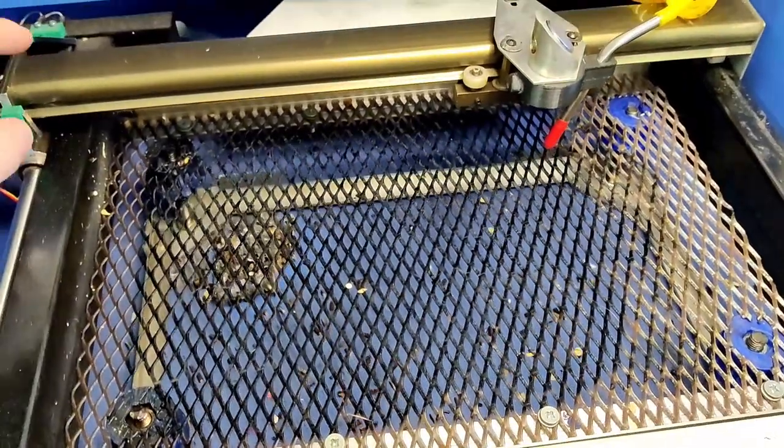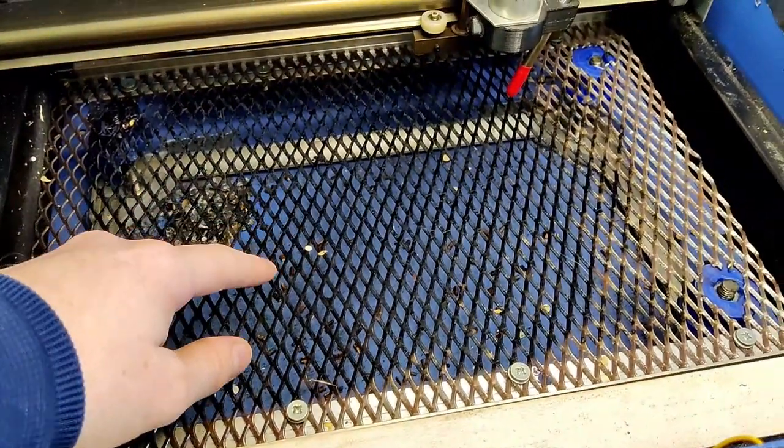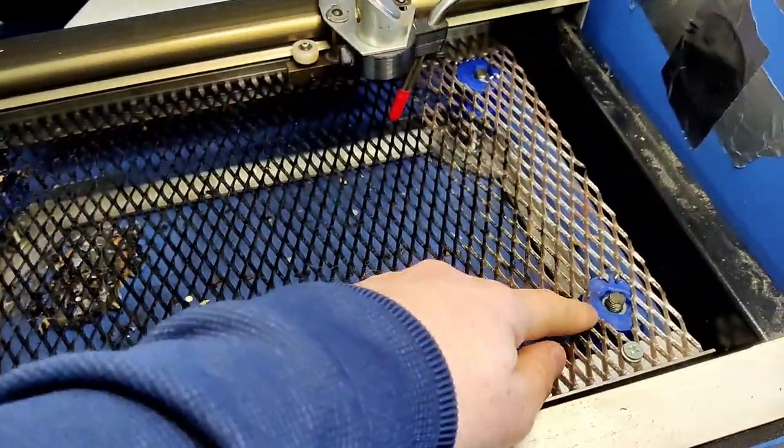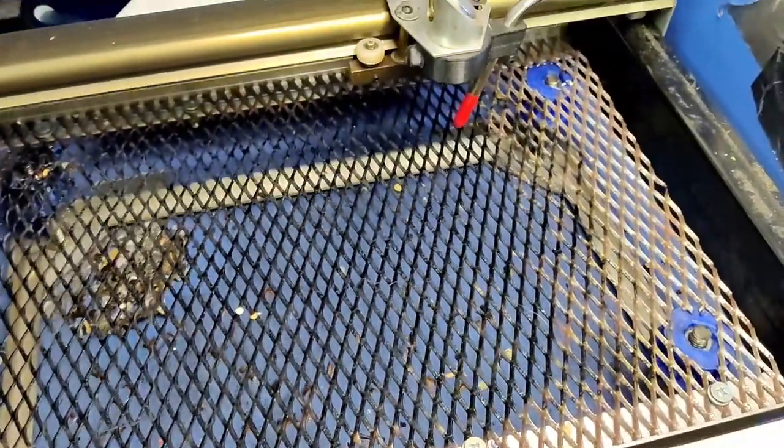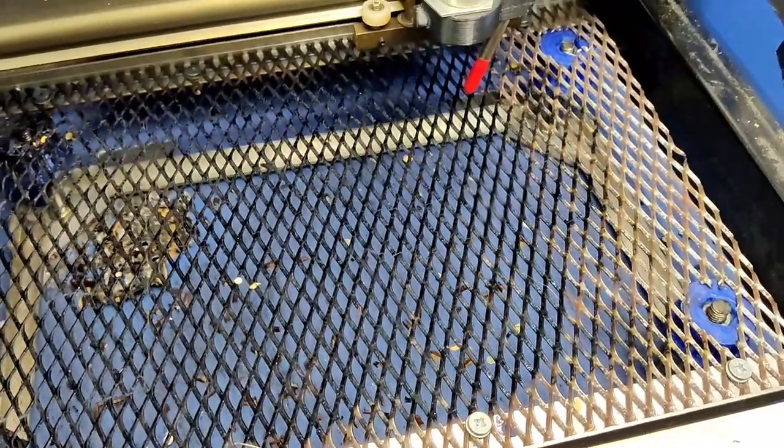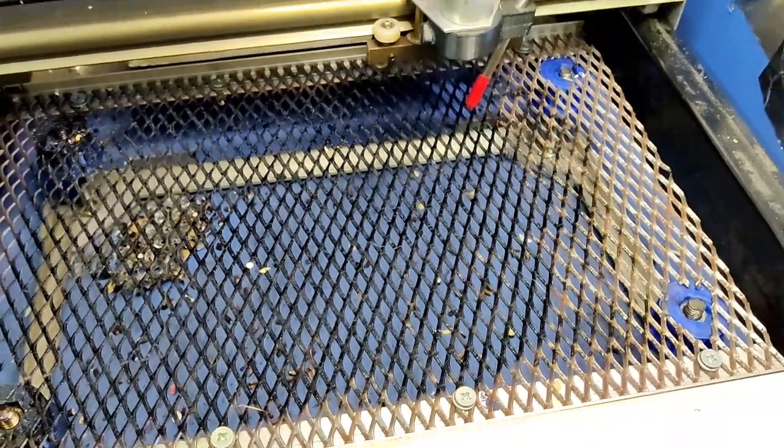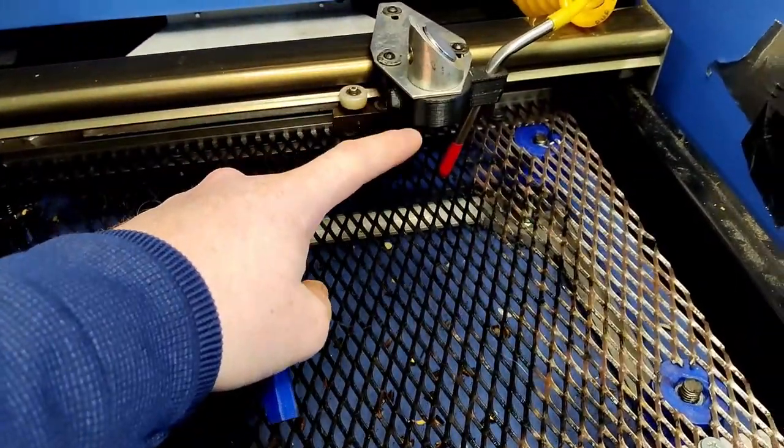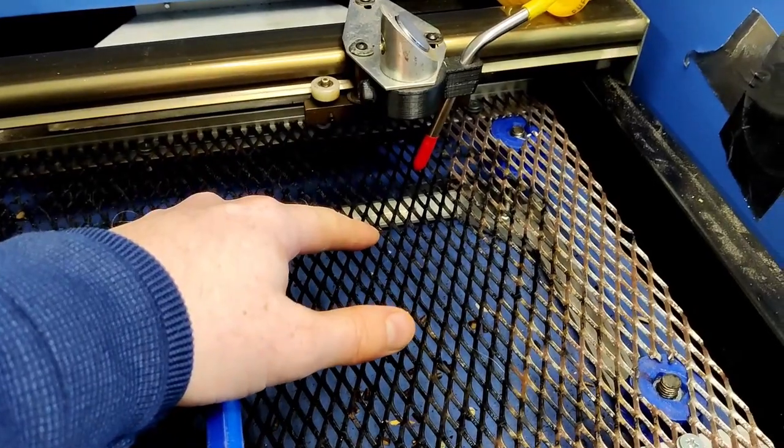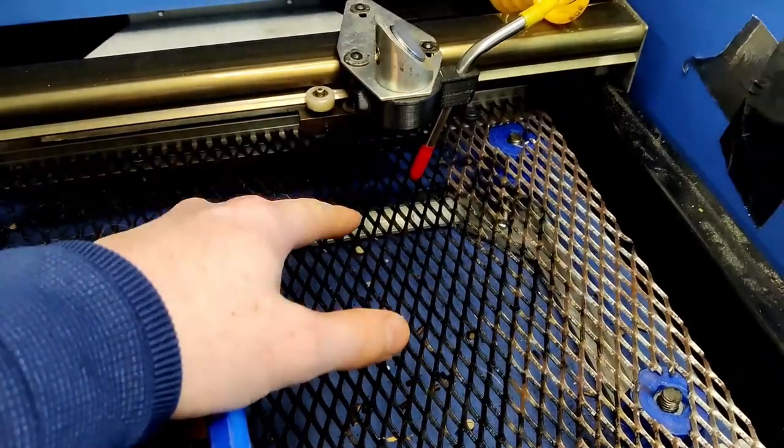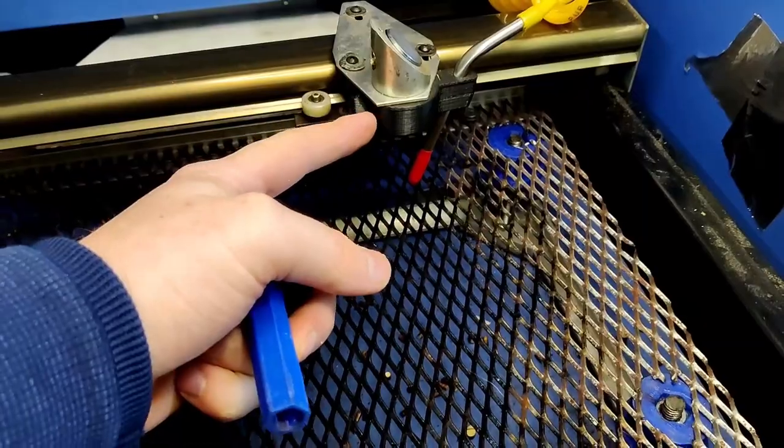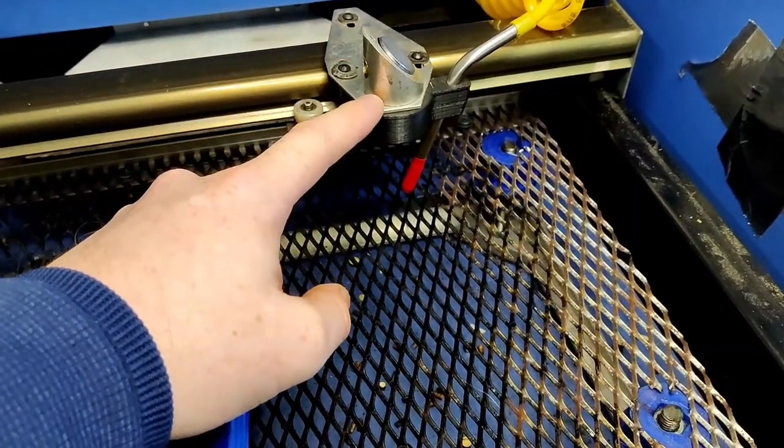The next upgrade on my laser cutter was the introduction of this mesh bed along with a system to raise and lower the bed to compensate for different material thicknesses. If you imagine from the lens here to your work surface depending on the thickness of the material this can change and that is a fixed focal height on this system.